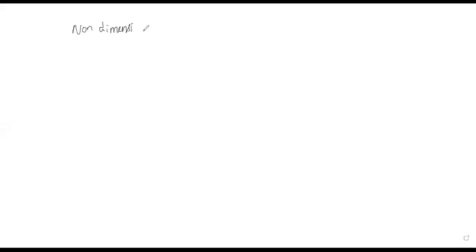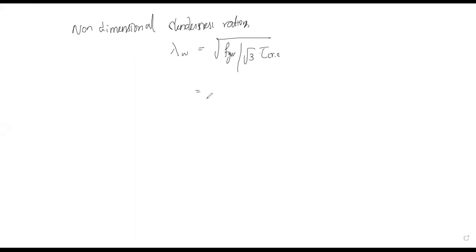Continuing with the shear capacity, the non-dimensional slenderness ratio lambda_w is equal to root of (fi_w divided by root 3 into tau_cr_e). The fi value is 250 N/mm² divided by root 3 into tau_cr value of 34.394, which gives lambda_w equal to 2.048.